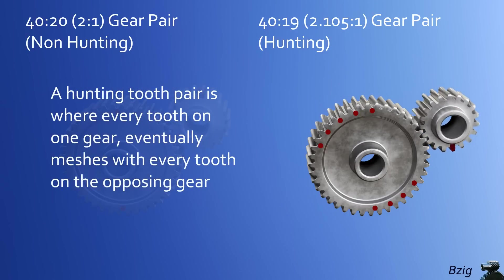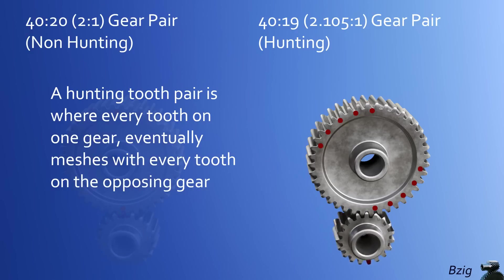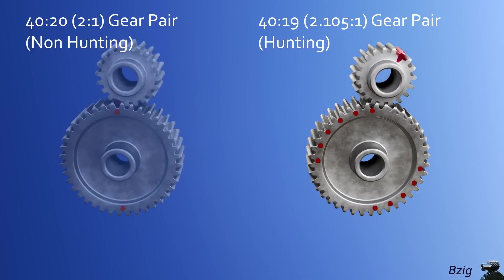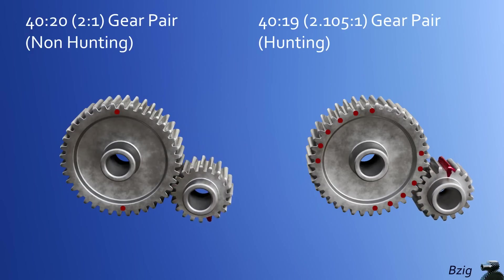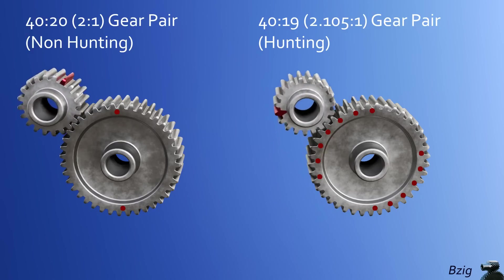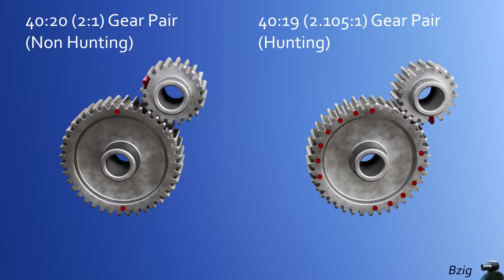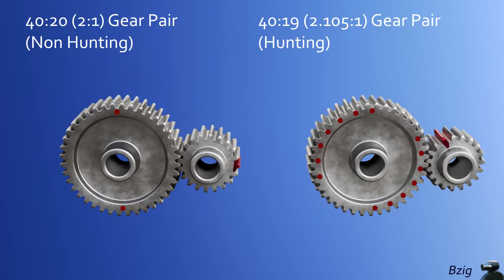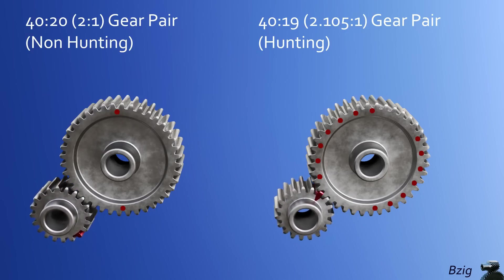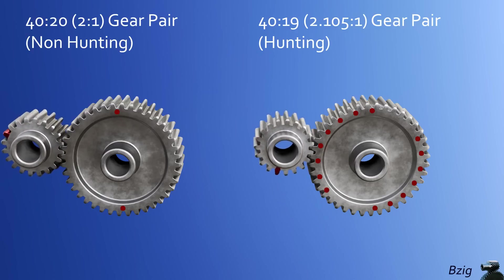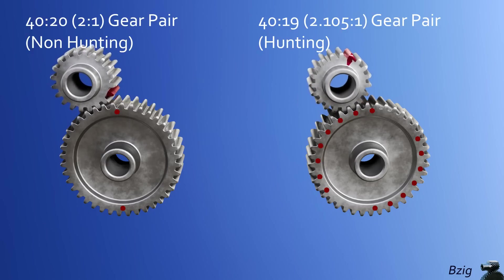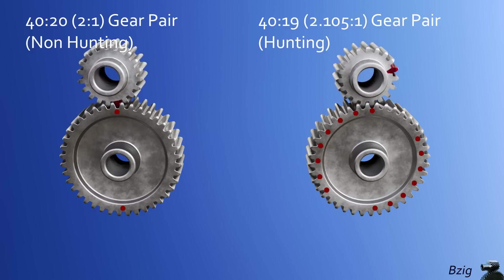This definition in words is: a hunting-tooth pair is where every tooth on one gear eventually meshes with every tooth on the opposing gear. So it appears that prime numbers are a way to achieve hunting gear ratios, but it turns out that while a prime number is a sufficient condition for hunting, it's not a necessary condition. The necessary condition is to choose gears that don't have a common factor in their tooth counts. 40-to-19 works because 19 is prime, so it has no factors other than 1 and itself, and 40 is non-prime with factors of 2 and 5. 40-to-19 meets the necessary condition for hunting because 40 and 19 don't share any common factors.